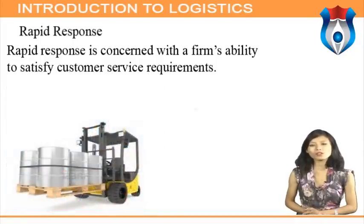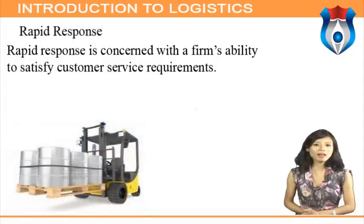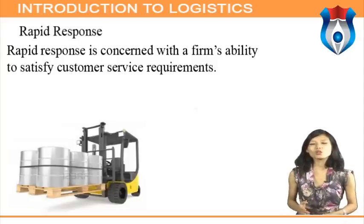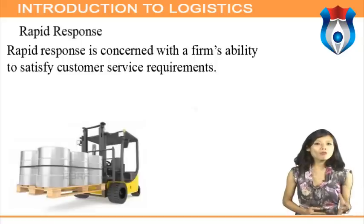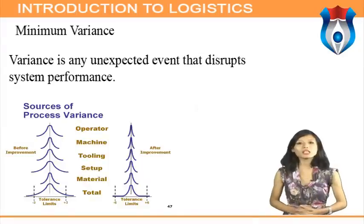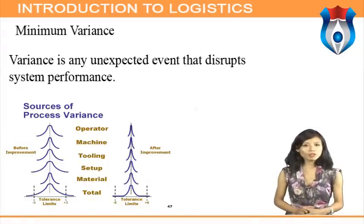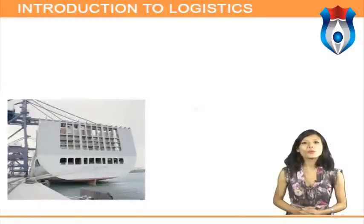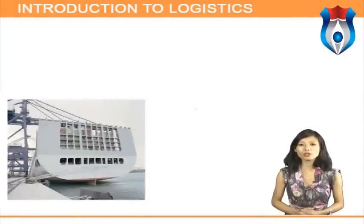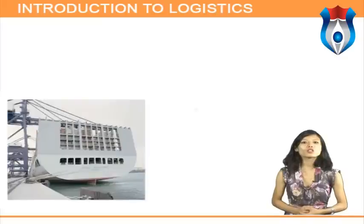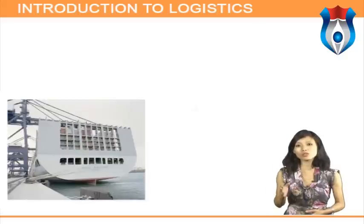Rapid response is concerned with a firm's ability to satisfy customer service requirements in a timely manner. Information technology has increased the capability to postpone logistical operations to the latest possible time and then accomplish rapid delivery of required inventory. Minimum variance — variance is any unexpected event that disrupts system performance, and may result from any aspect of logistical operation. Potential reduction of variance relates to both internal and external operations.